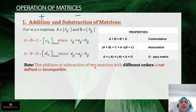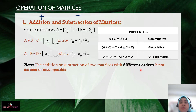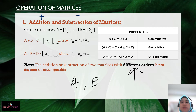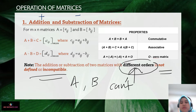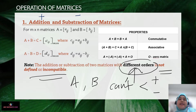Note that the addition or subtraction of two matrices with different orders is not defined — it is incompatible. If matrix A and matrix B have different orders, you cannot add or subtract them. Let's look at our next example.